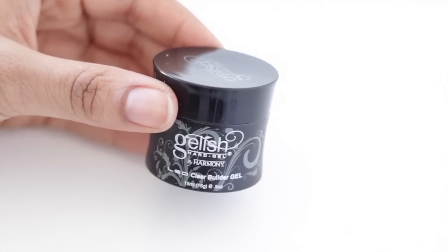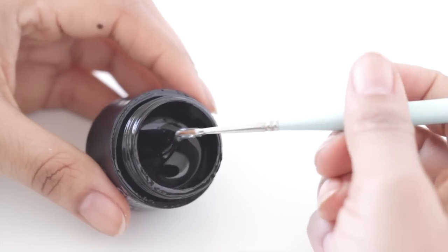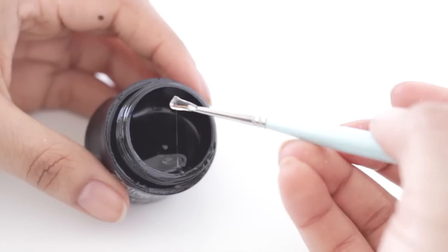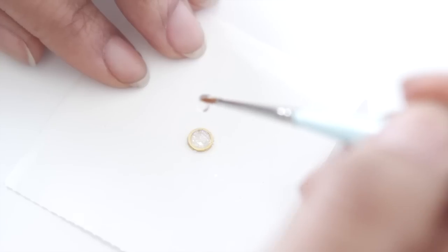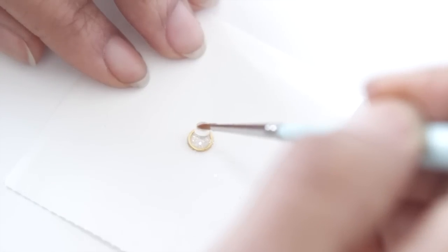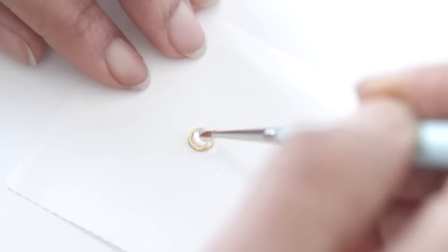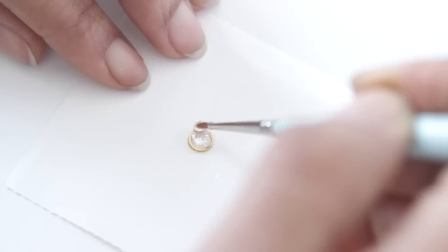Then next we're gonna take a builder gel. And before you ask me, yes, it does have to be builder gel. No, I can't tell you why right now. But you just want to take a generous amount of that onto your brush and then drop it down onto your glitter. At first it won't really want to fall, but gravity will pull it down and then just do a circular motion until you have a dome.